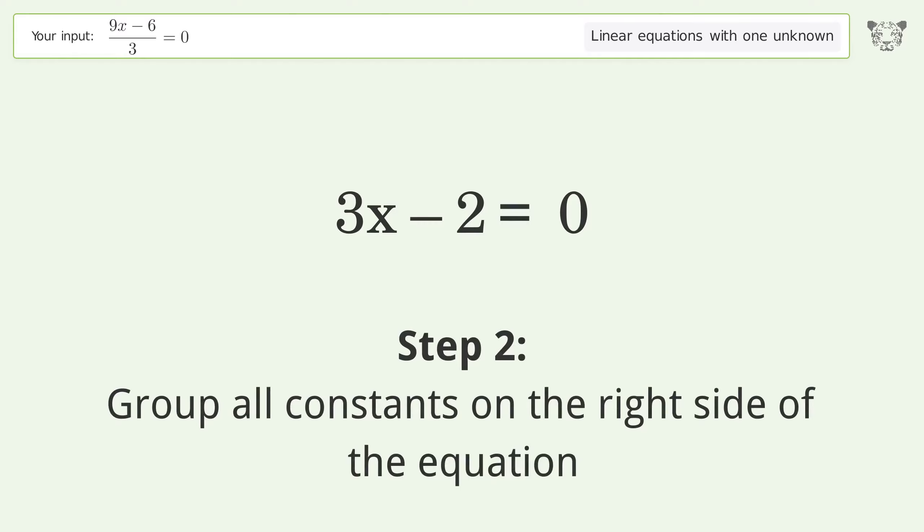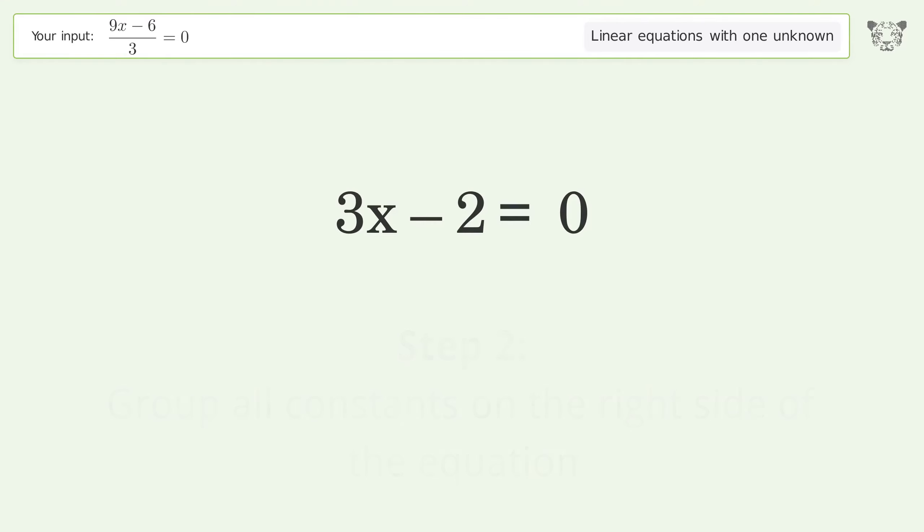Group all constants on the right side of the equation. Add 2 to both sides. Simplify the arithmetic.